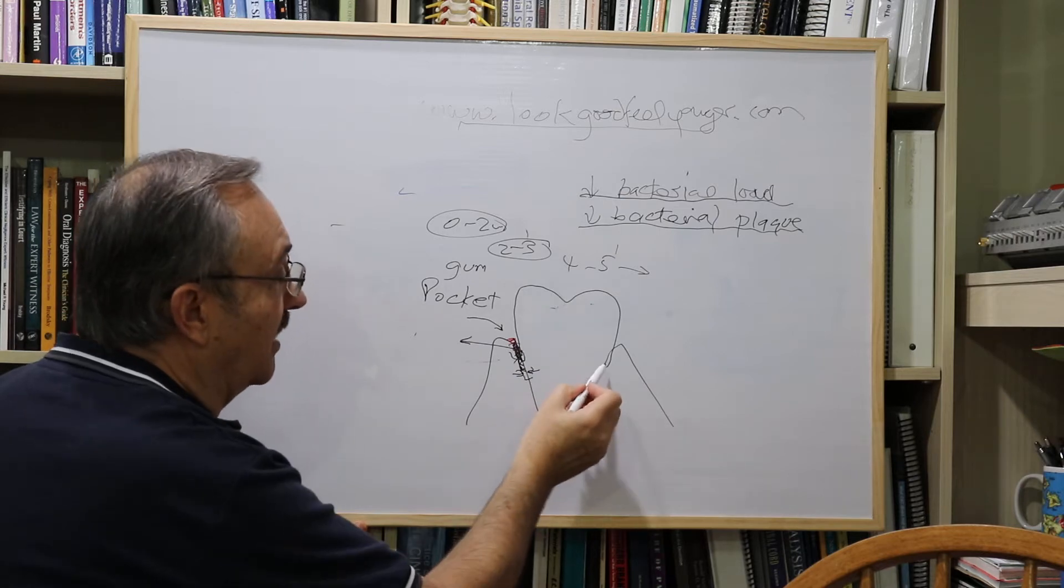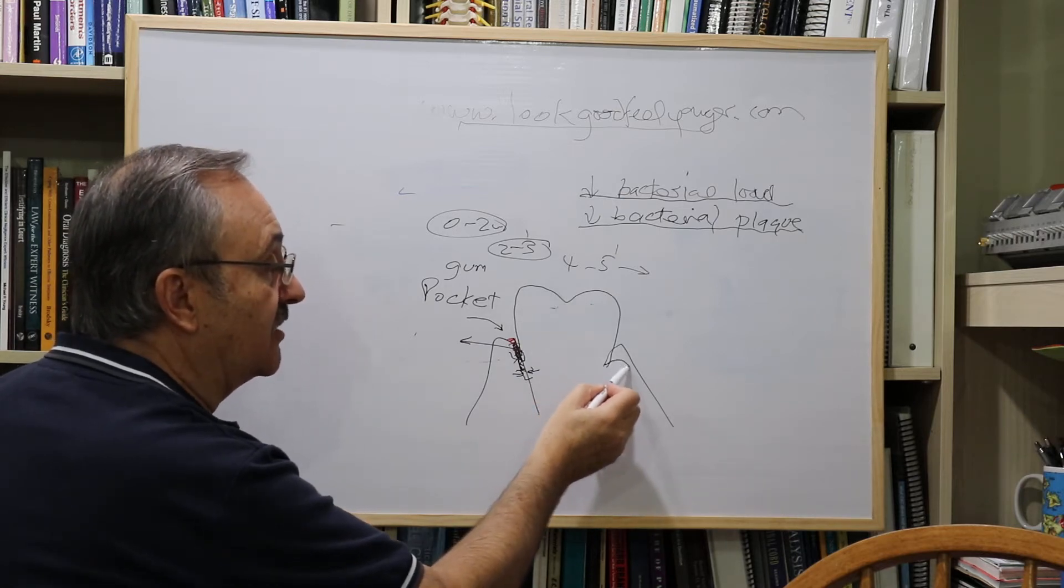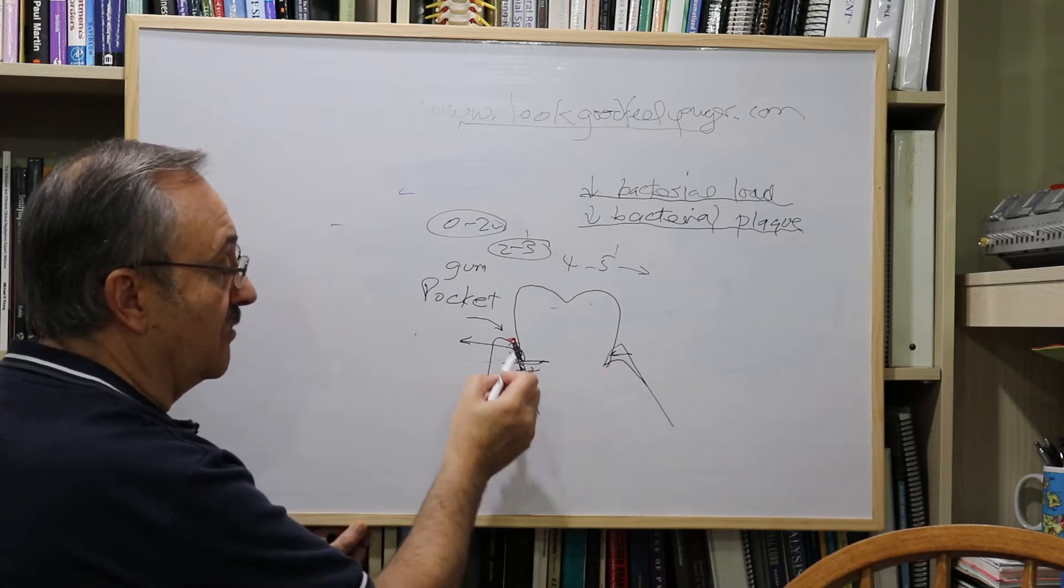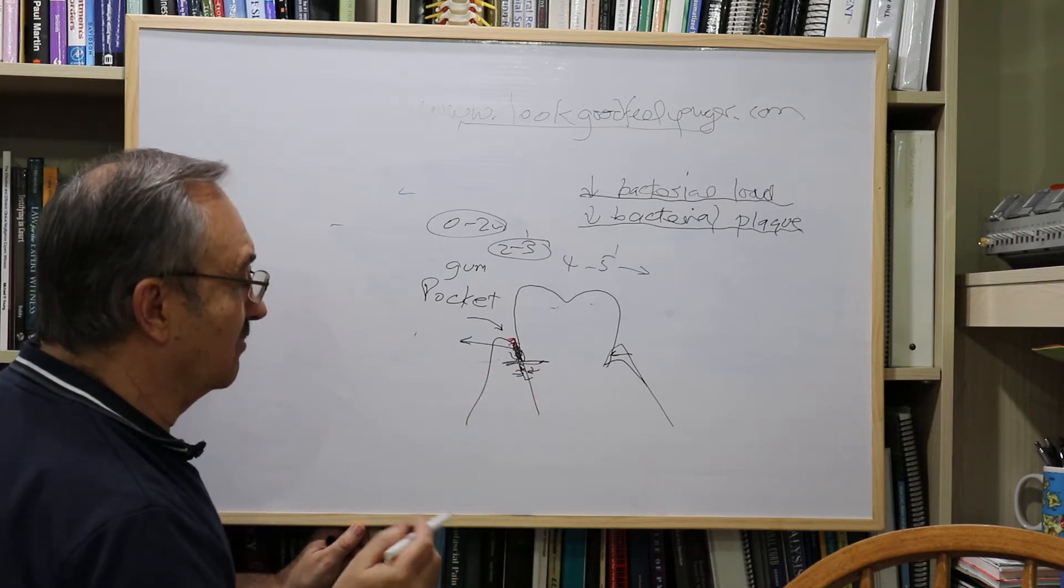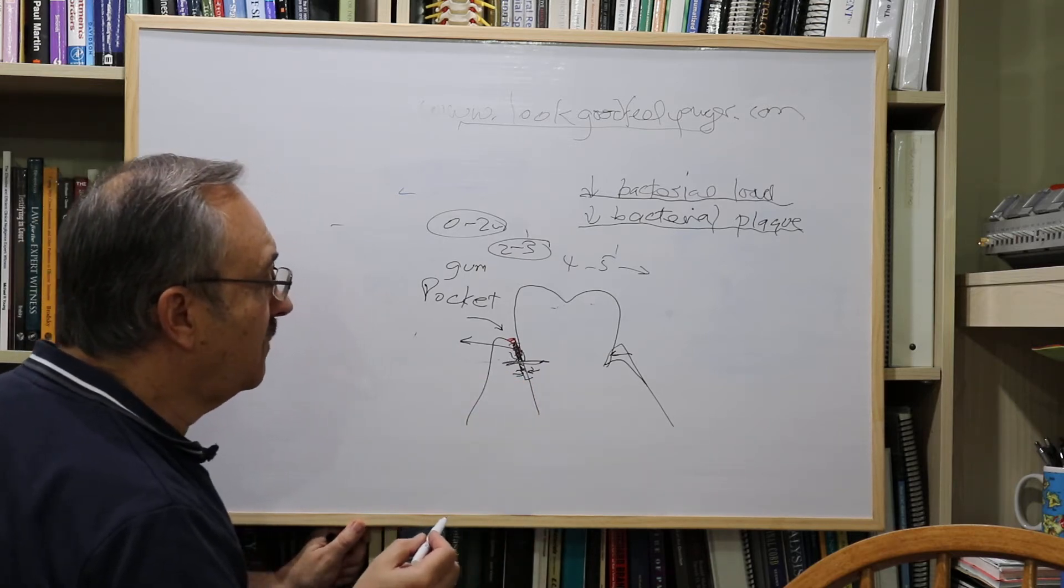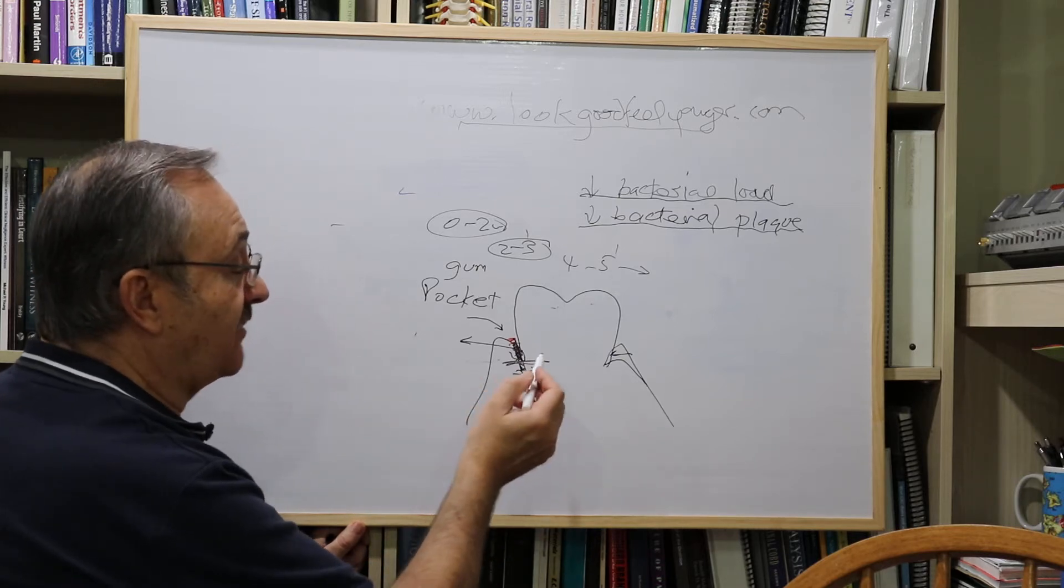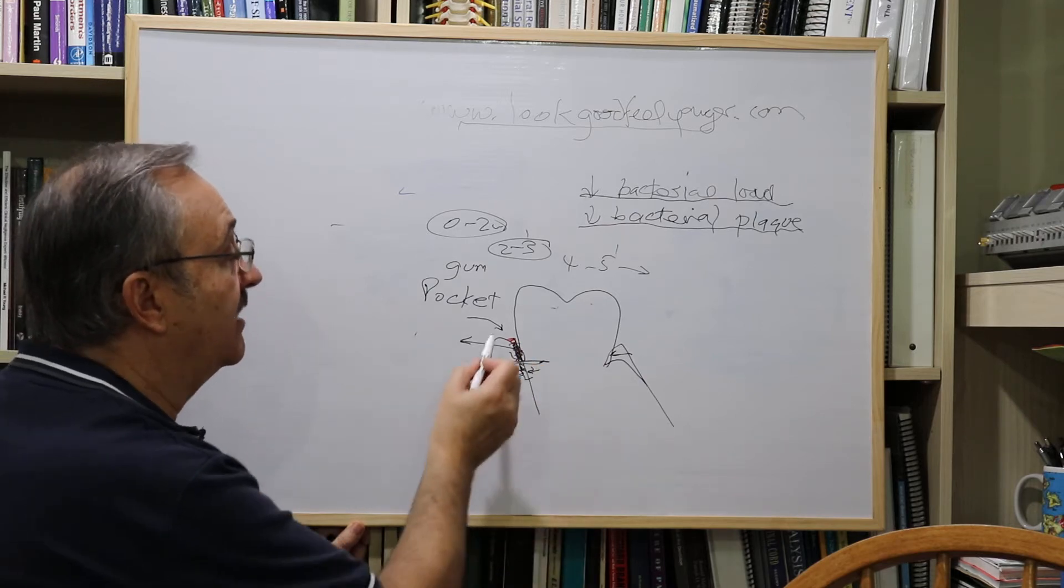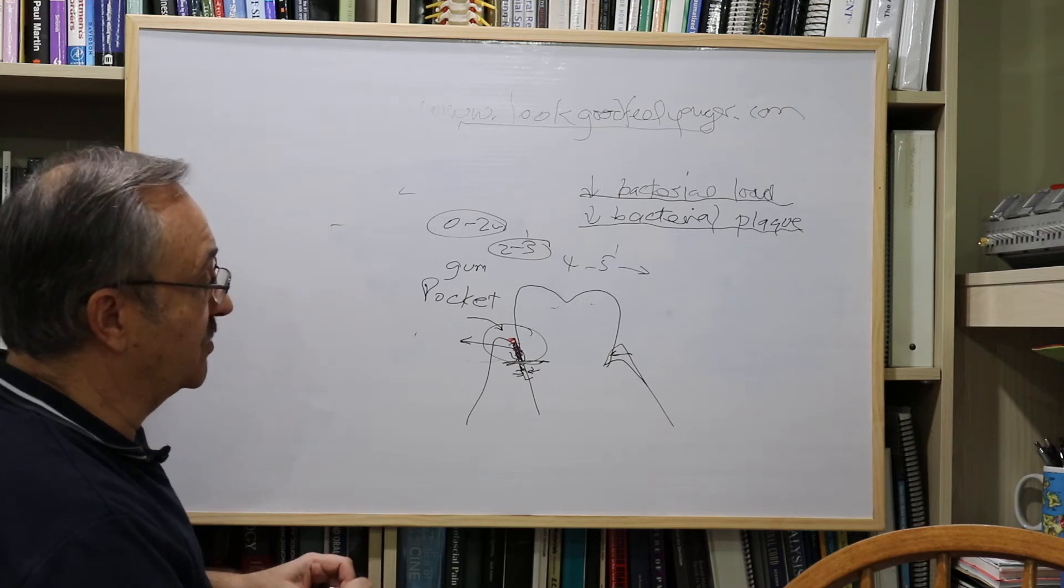In the olden days, we used to do a gingivectomy, which was basically to remove the gum to get in there better, because in effect it reduced the depth. But that's not really the most pleasant of procedures, and it's far better to do it non-surgically if you can, and so the name of the game is getting the toothbrush bristles in there.